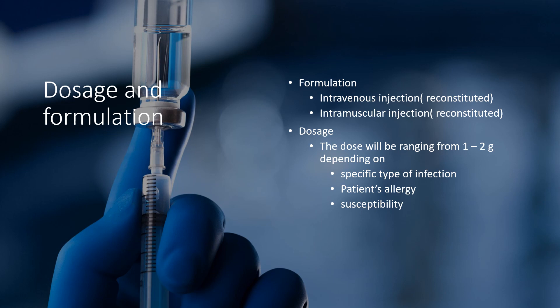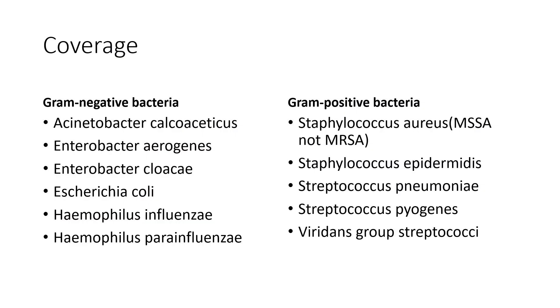The dose ranges from one to two grams depending on the specific type of infection, the patient's allergy history, and susceptibility reports. Ceftriaxone can be used to treat infections caused by certain gram-negative and gram-positive bacteria. For gram-negative bacteria, ceftriaxone covers Acinetobacter, Enterobacter, E. coli, and Haemophilus species.